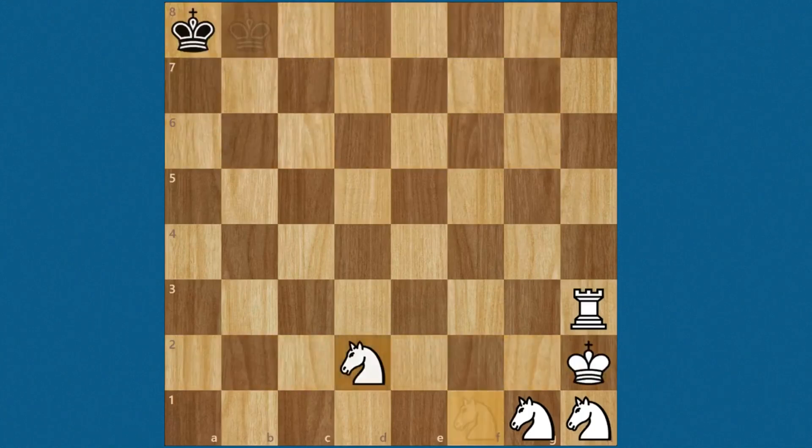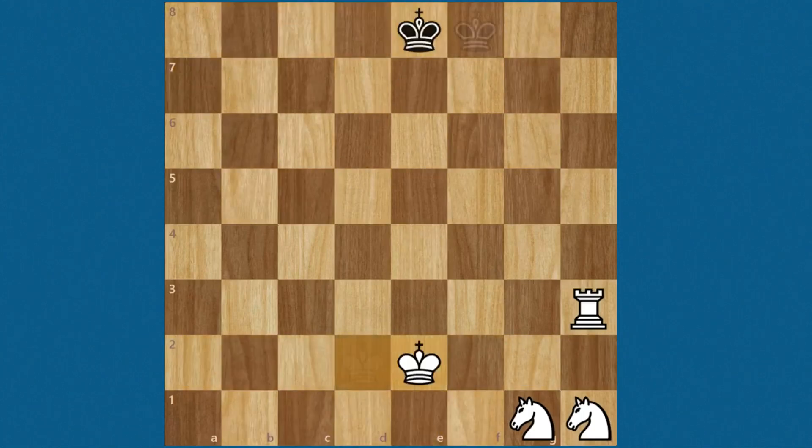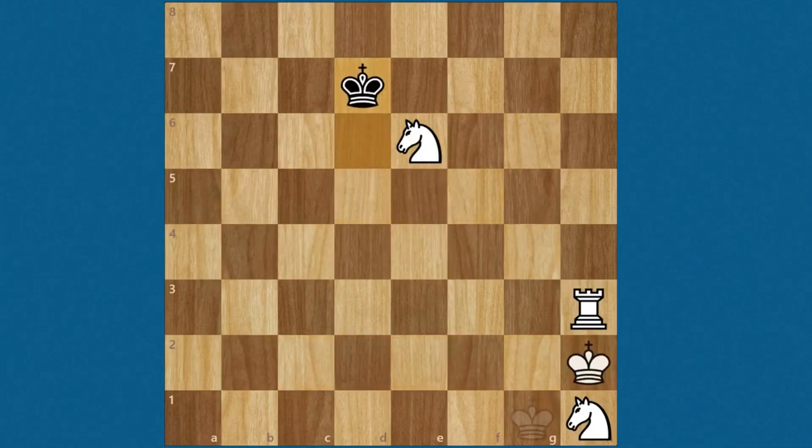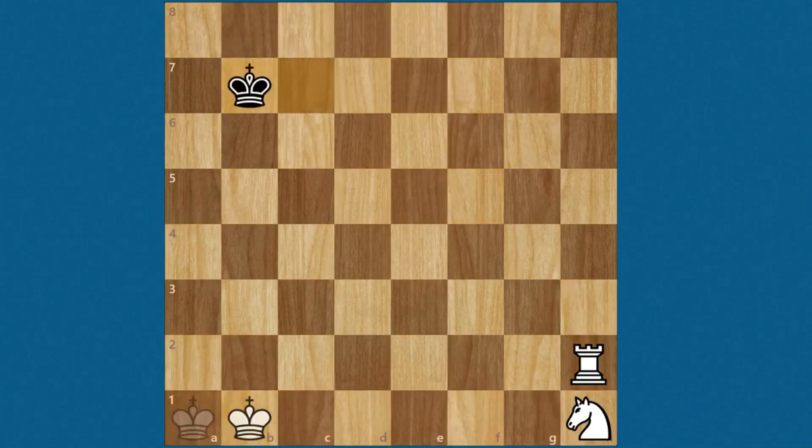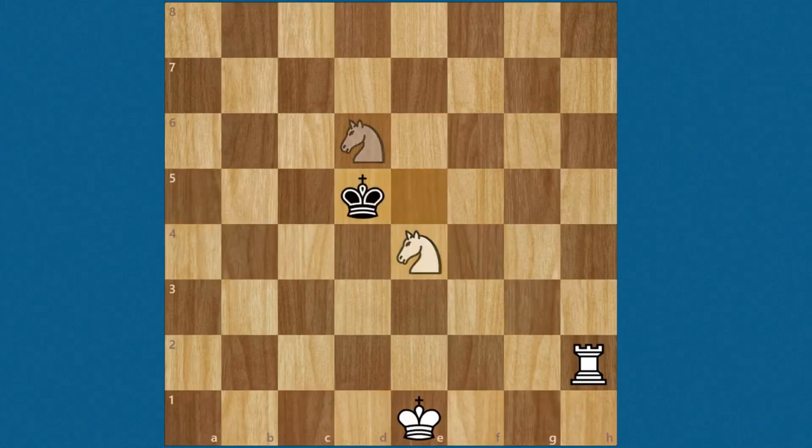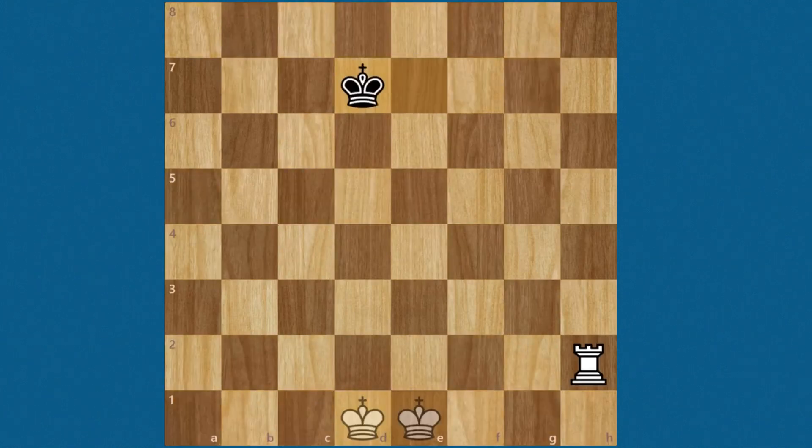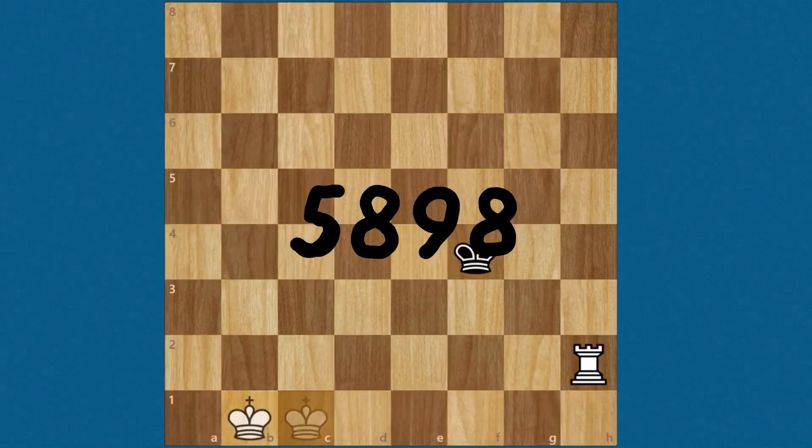In total, we lost four tempi, which takes away two moves from the total 5,900. This means the answer we are left with when we ask what the longest possible game of chess is totals at 5,898 moves.